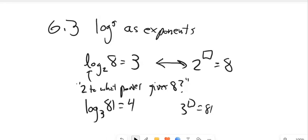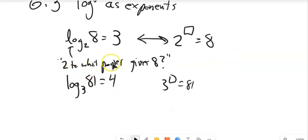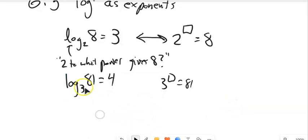One way to think about logarithms is to rewrite them as exponential statements. So we have this question, 2 to what power gives 8. But I also have this relationship. If log base 3 of 81 equals 4, that's the exact same statement as 3 to the fourth equals 81. And when I say it's the exact same statement, what I mean is it's the same interplay between the numbers 3, 4, and 81.